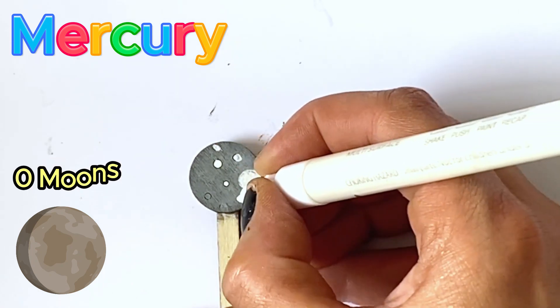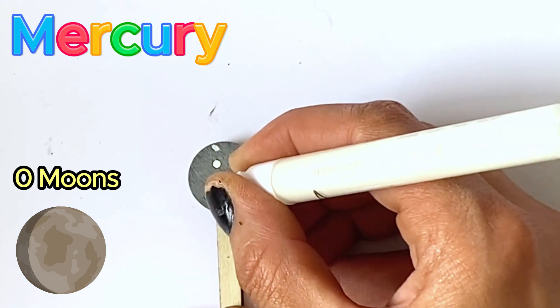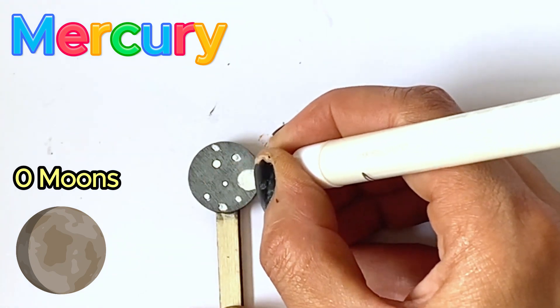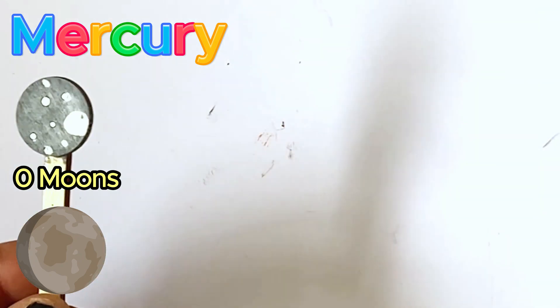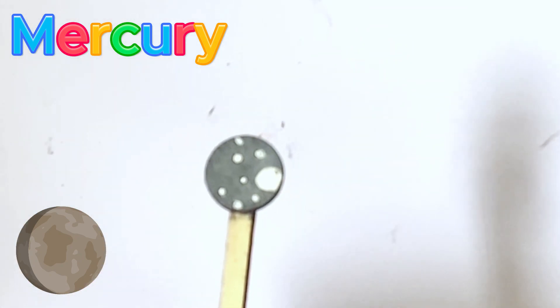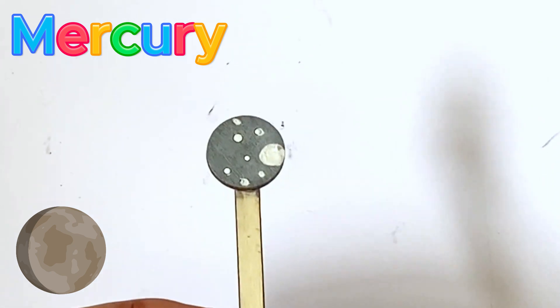And Mercury has a slow rotation. One day on Mercury is 59 Earth days. Mercury has no moons, probably due to it being so close to the Sun. The Sun's gravitational pull would probably eliminate any moon candidates. And here is our finished Mercury.